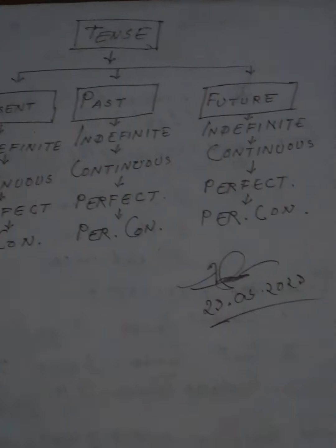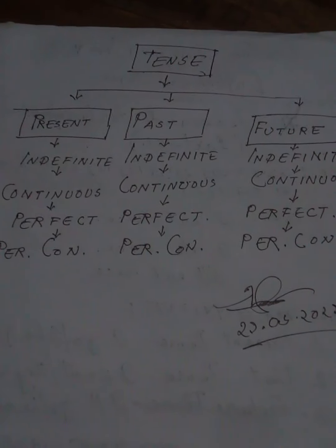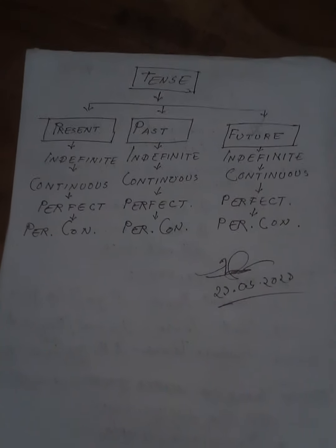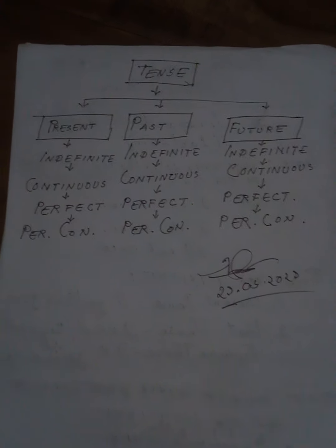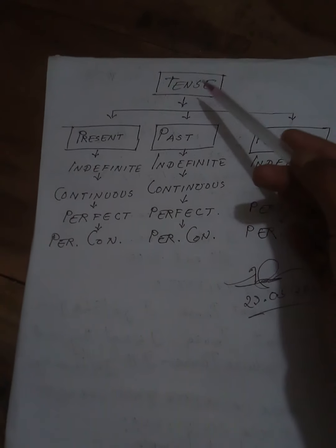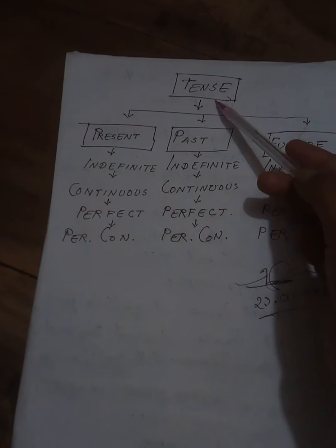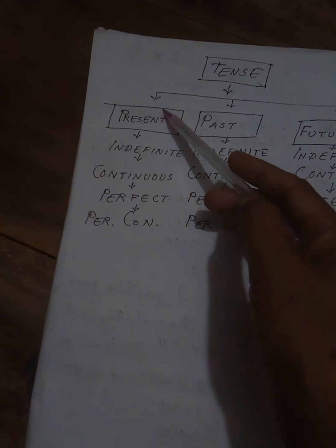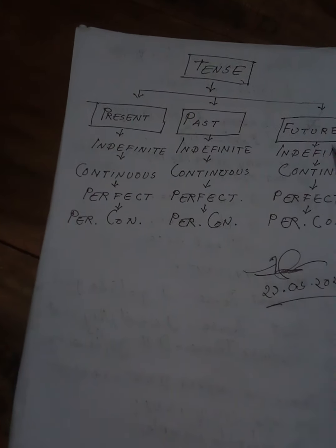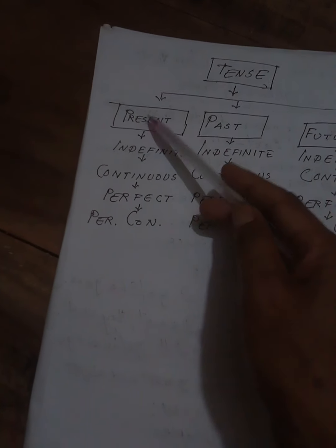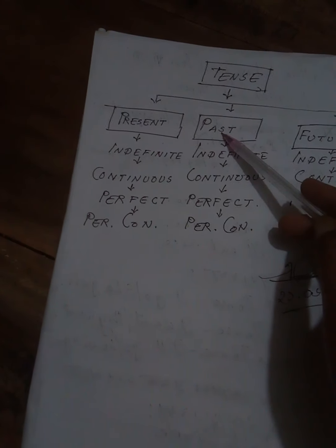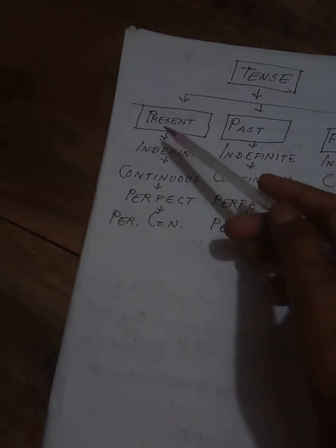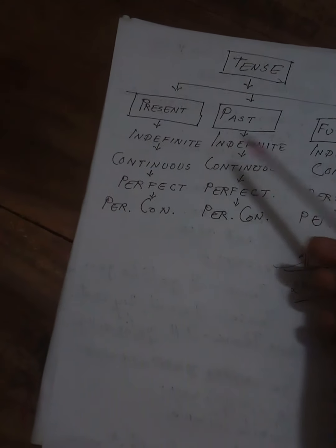And future tense gives us: future indefinite, future continuous, future perfect, and future perfect continuous. In this way, we divide tense into these types. There are mainly three types: present tense, past tense, and future tense — that is, vartoman kaal, otita kaal, and bhobishat kaal.